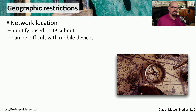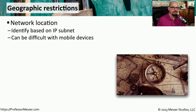One way to protect data is to make policy decisions on where the data is located and where you as the user might be located. We refer to these as geographic restrictions. One way to tell where someone may be located is to see what subnet they might be connected to using their IP address.